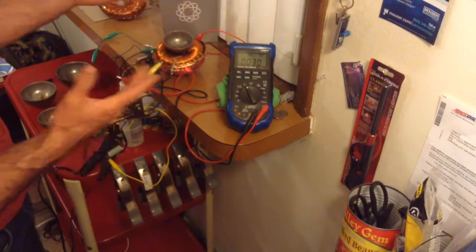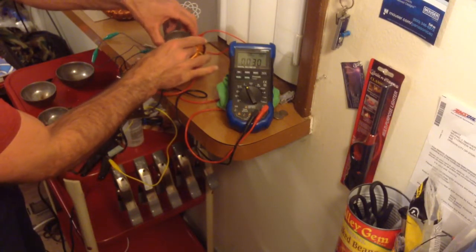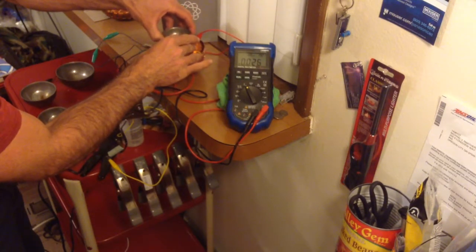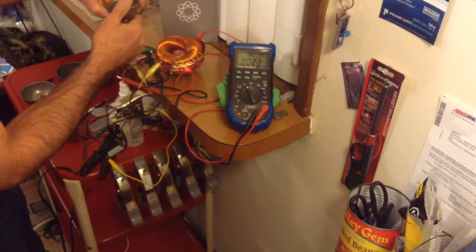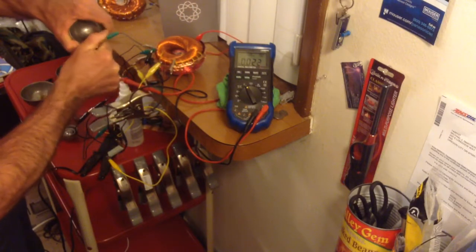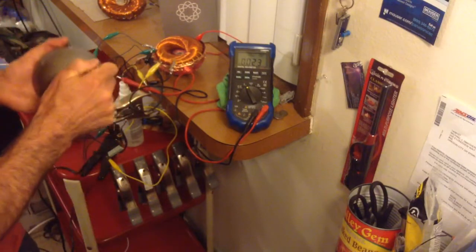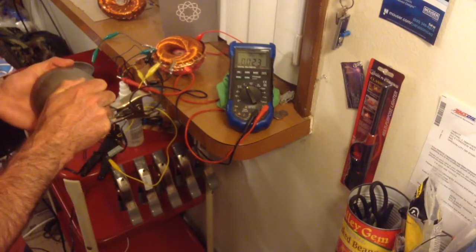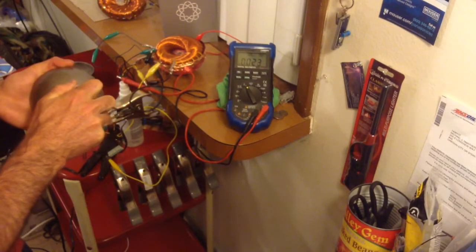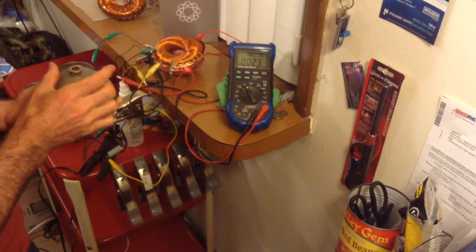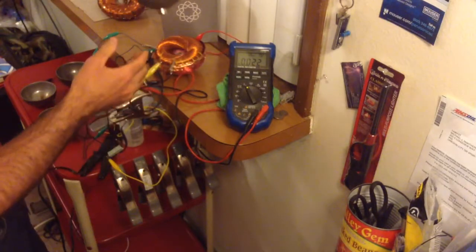And interesting is, the larger the steel bowl you have attached to the magnet, the larger that surface area coupling with the coils that are being powered, the larger your voltage will be.